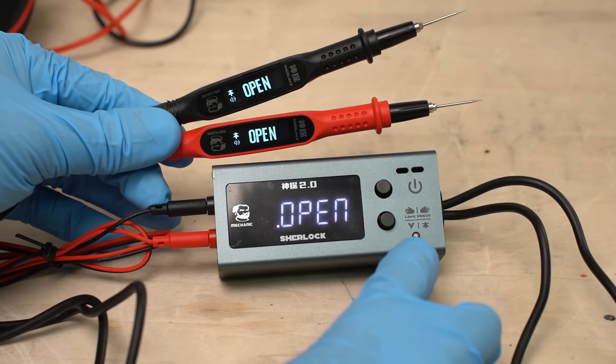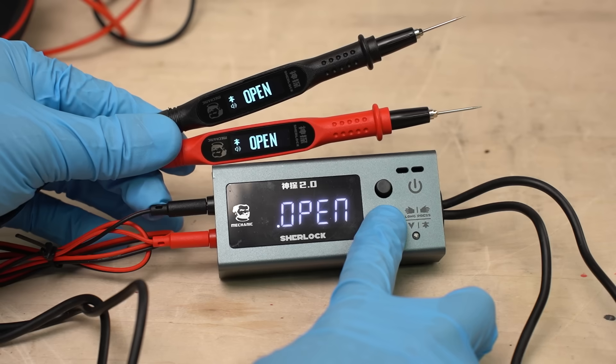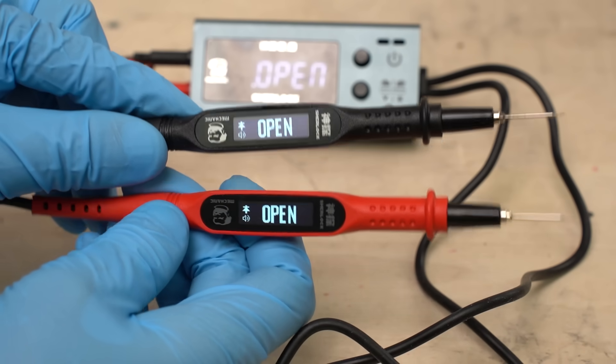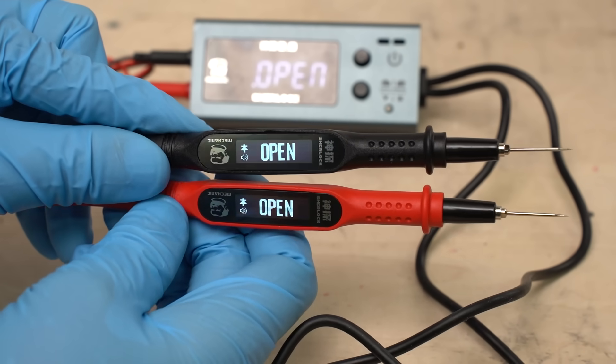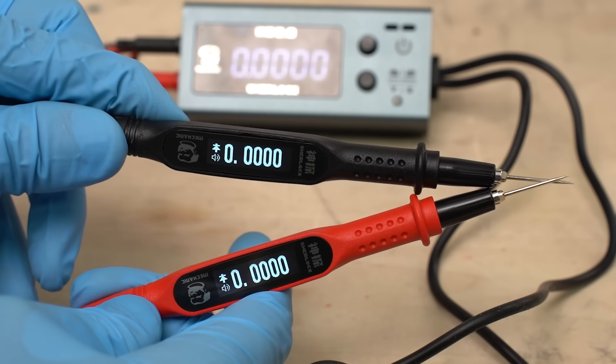You can switch the measurement modes by pressing the button on the device. If you long press this button, you can switch between right-handed mode and left-handed mode. The second thing you can do is to detect short or open circuits. When the circuit is open, the screen says open. When the circuit is shorted, it plays a beeping sound. That's all.